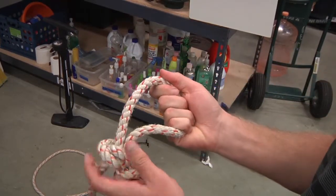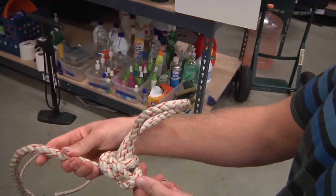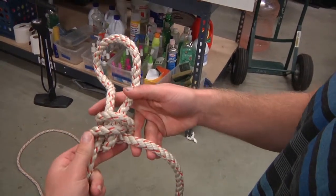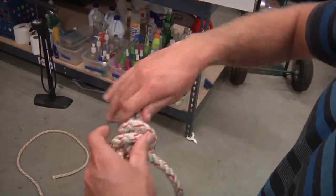So that could be your handle in your rope ladder. That's what it looks like from that side. And here is the other side. So let's do that one more time.